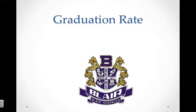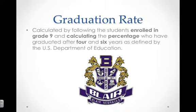Graduation rate is calculated by following the students enrolled in grade 9 and calculating the percentage who have graduated after 4 and 6 years, as defined by the U.S. Department of Education. The state goal for graduation rate is 90%.